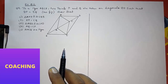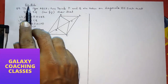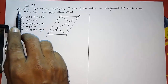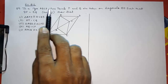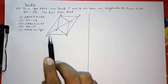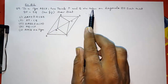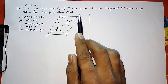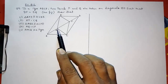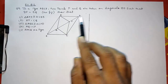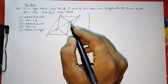Hello friends, today we are going to solve CBSE Class 9th Maths Exercise 8.1 Question Number 9. In a parallelogram ABCD, two points P and Q are taken on diagonal BD such that DP is equal to BQ.